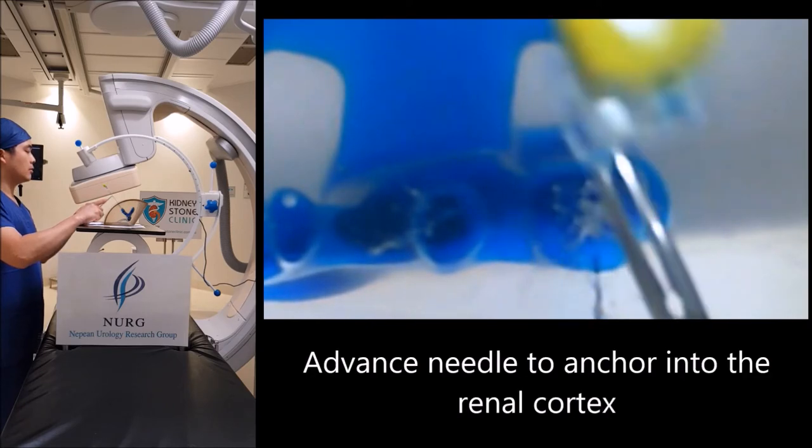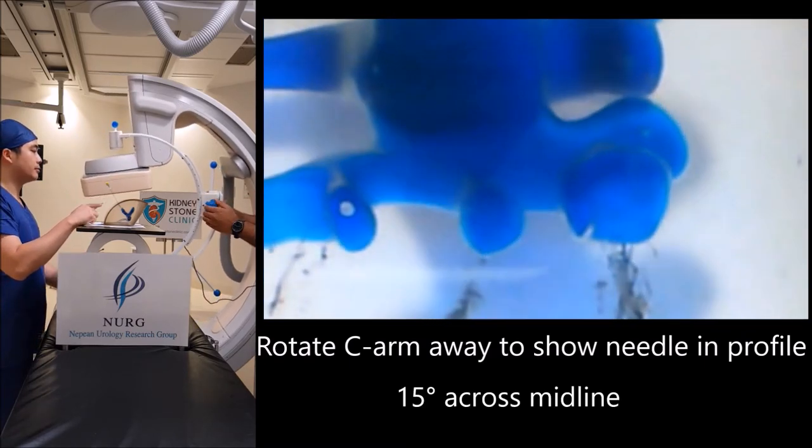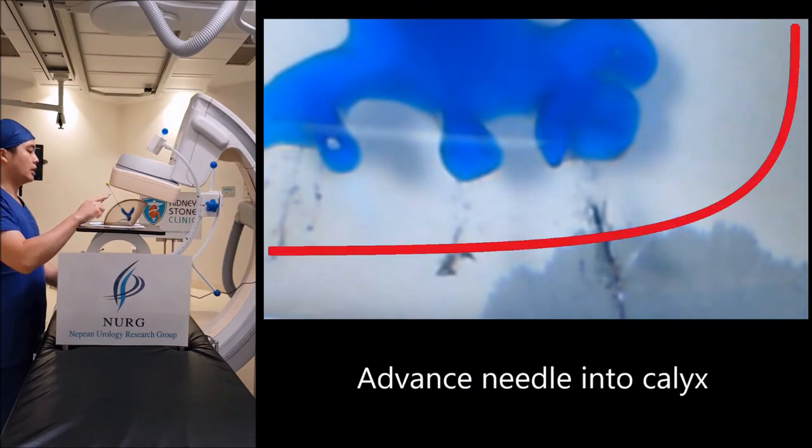Advance the needle to anchor into the renal cortex. Rotate the C-arm away to show the needle in profile. In practice, this is usually 15 degrees across the midline.